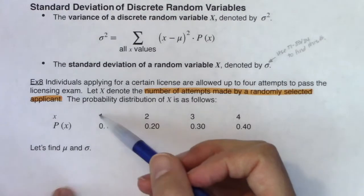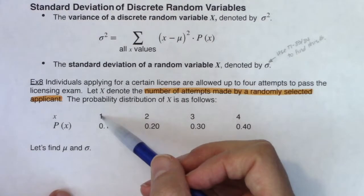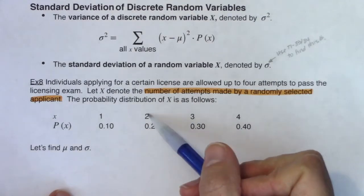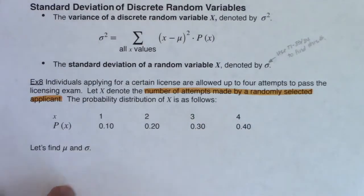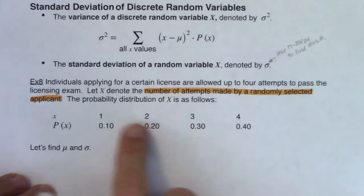Only 10% of folks pass this license exam on the first attempt. All right, 20% get it by the second. But I can feel the weight over here, right? This is a skewed left distribution because most folks are taking three or four attempts to pass that licensing exam.